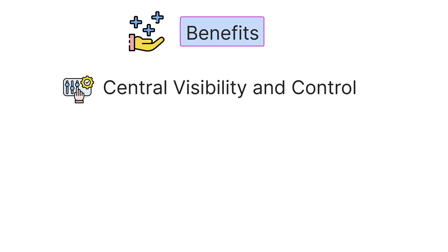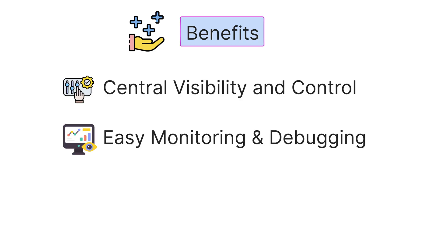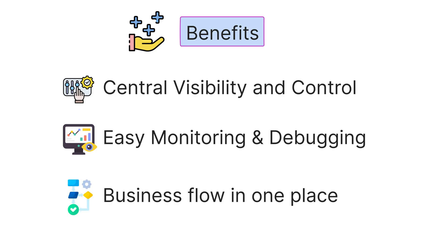Saga orchestration does have a few benefits over the traditional approach. It provides central visibility and control, it is easier to monitor and debug, and the business flow is kept in one place. Despite that, it adds complexity and the system is still tightly coupled.